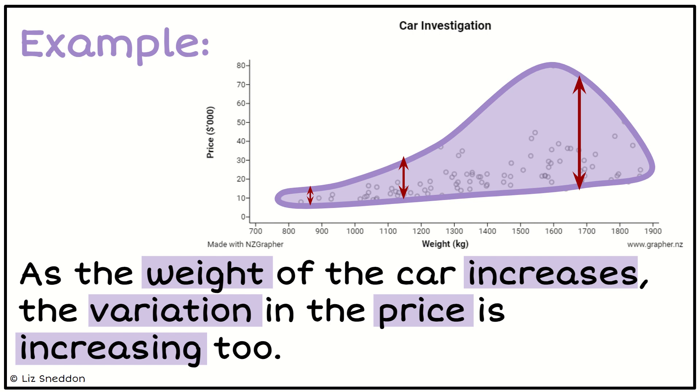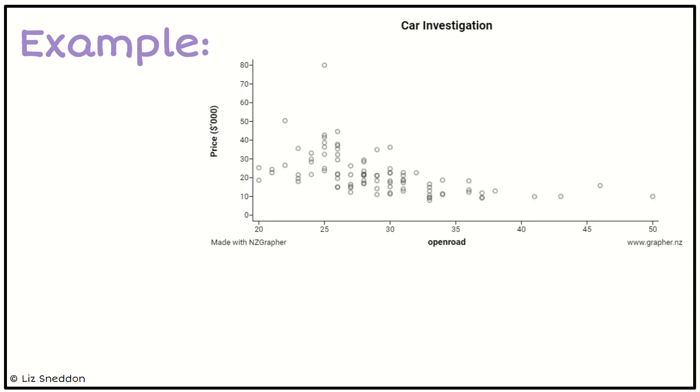Let's have a look at a second example. Now I've got a graph looking at the fuel efficiency of cars on the open road—how many miles per gallon they can get—and their price in thousands of dollars. I'm going to draw my blob around the data and look for different fuel efficiencies, how wide is that variation.